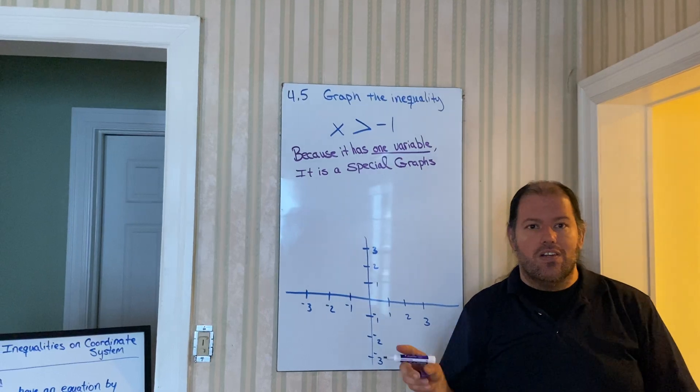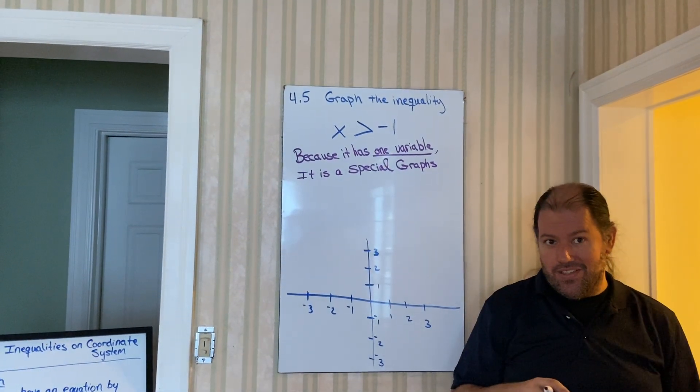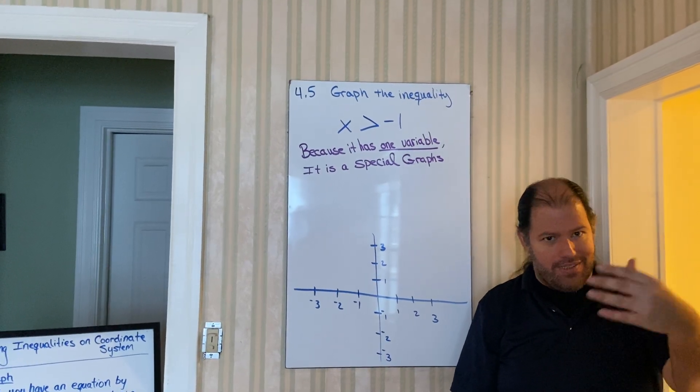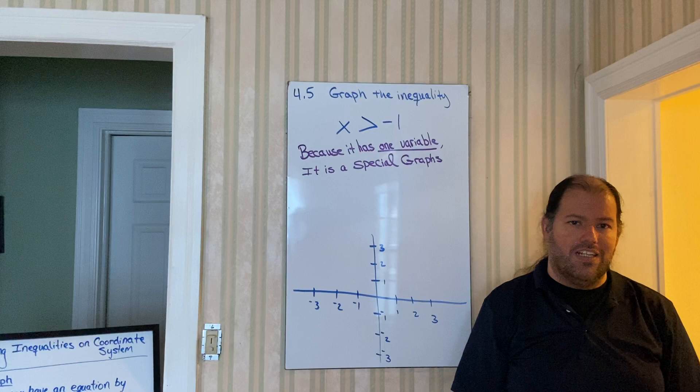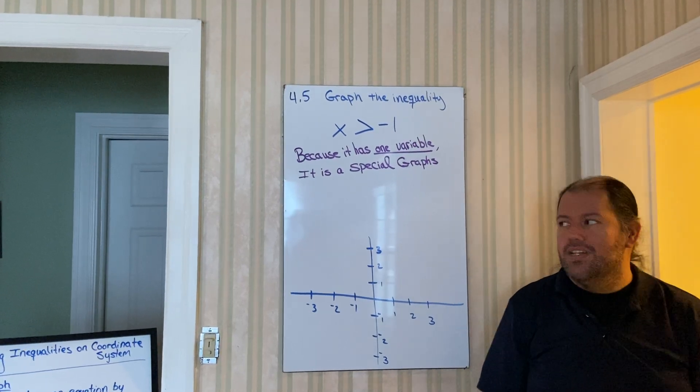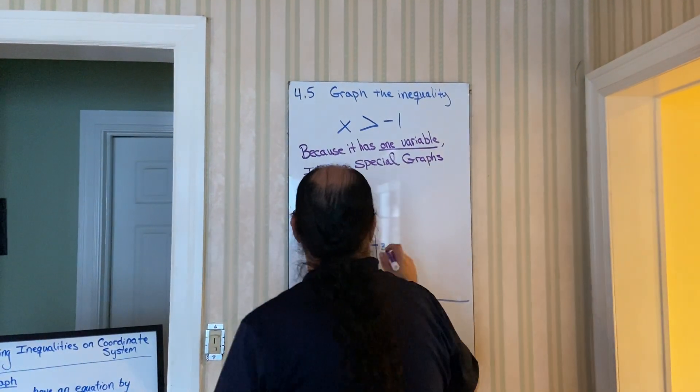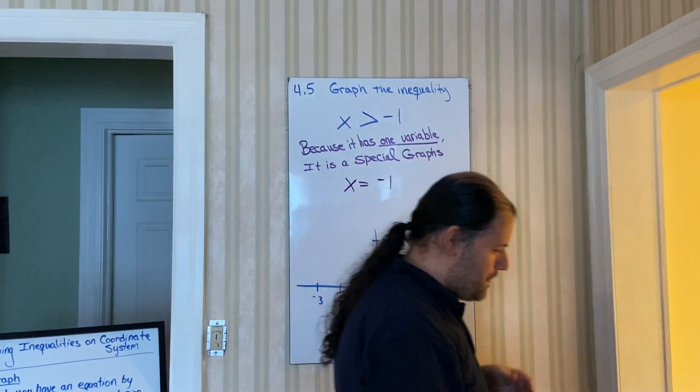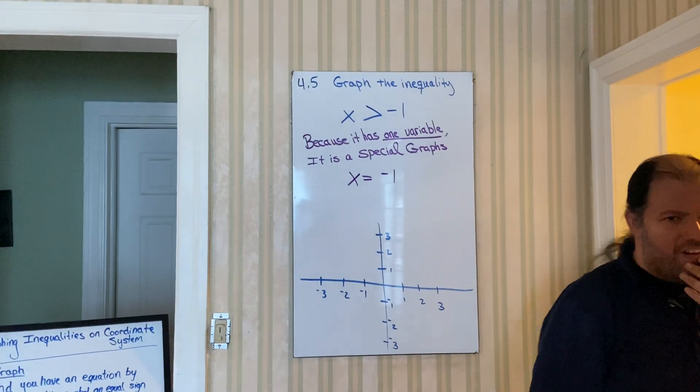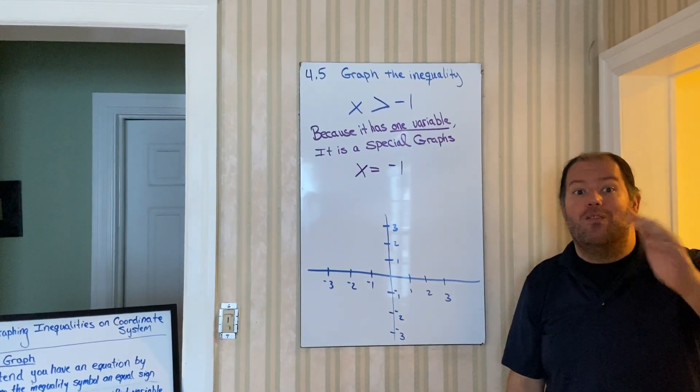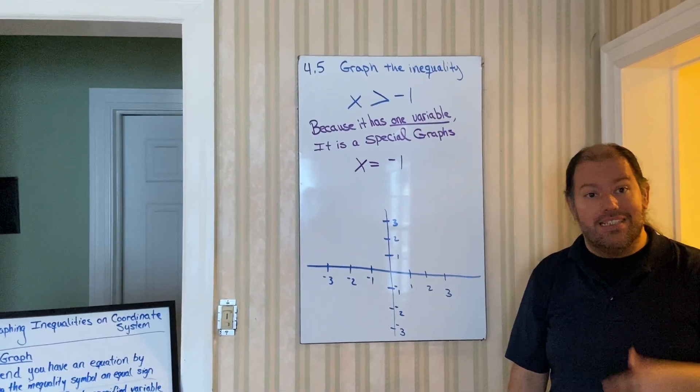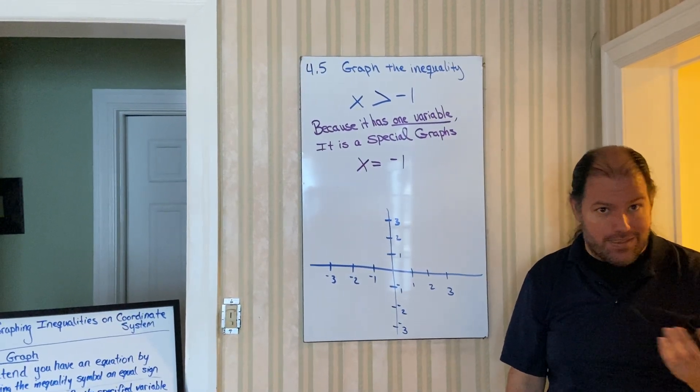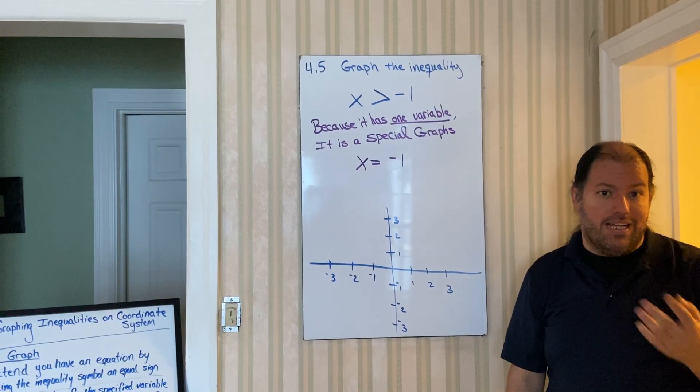We're still going to follow as many of the steps that we could do. So graphing step one. Pretend that you have an equal sign instead of an inequality symbol. So if we do that, we get x equals negative one. Notice that this guy doesn't have a y. So because it doesn't have a y, we can't even solve for the specified variable of y. What does that mean?